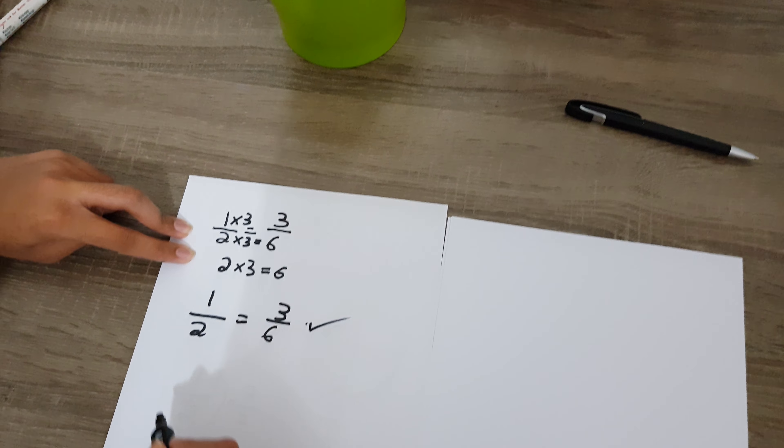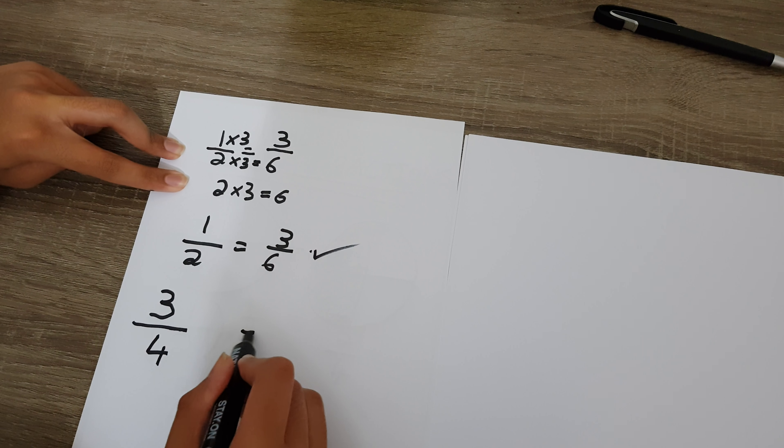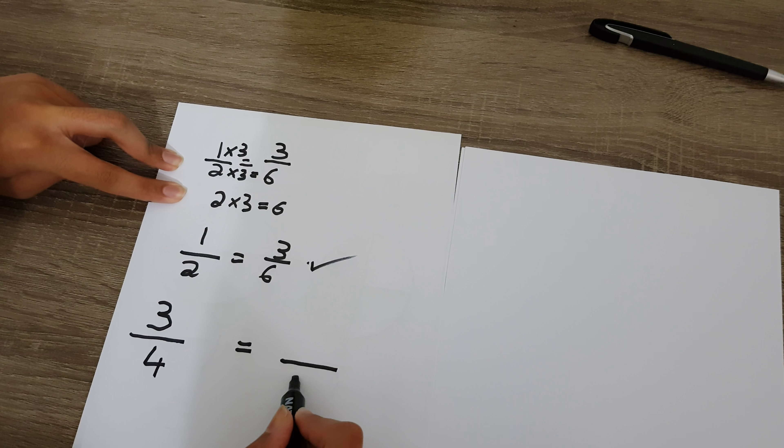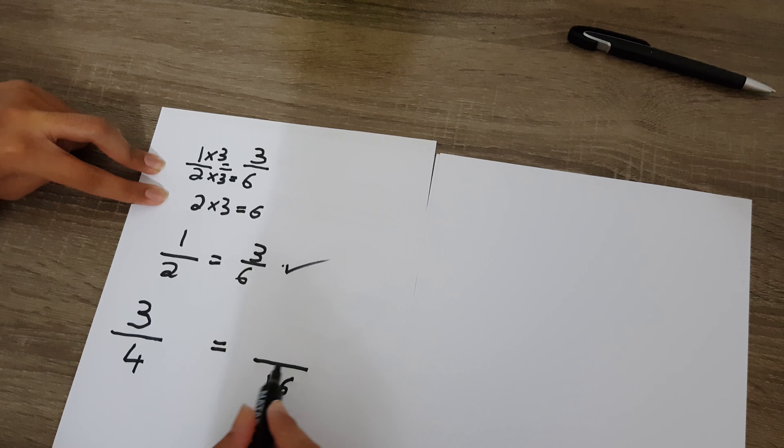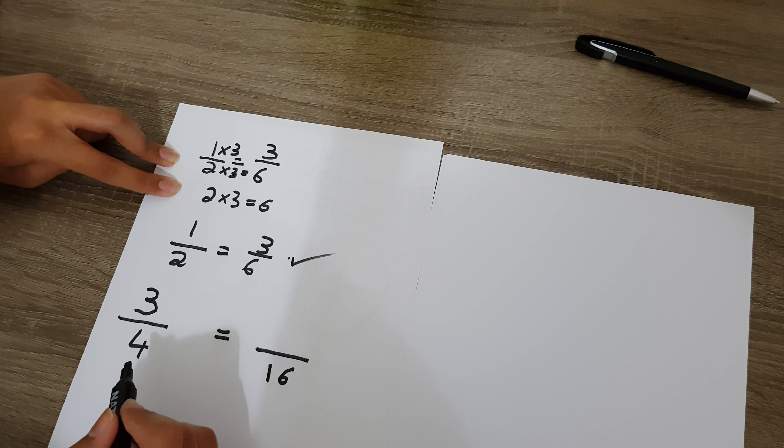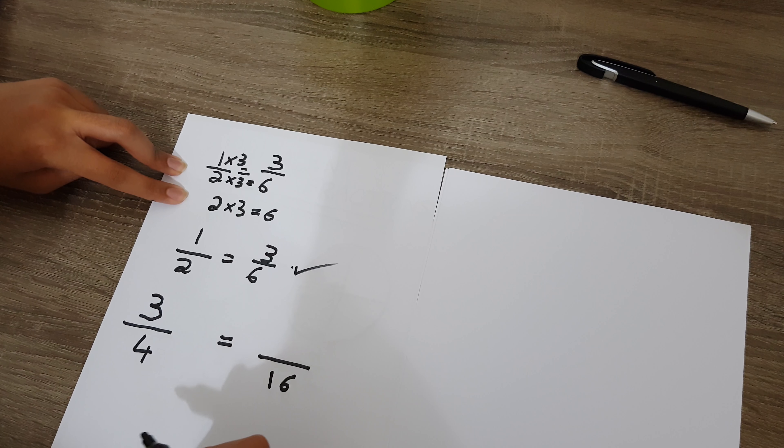Let's do another problem. Suppose you have three over four and you need to convert it into something with a denominator of 16. It should be the same amount as three over four. I recommend you to pause the video and try it out.